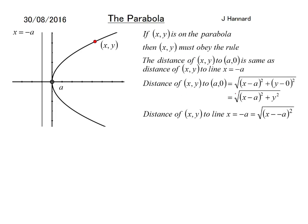And the distance of (x, y) to the line x equals minus a is the root of (x minus minus a) squared. And that's all to do with the points. So that means that the root of (x plus a) squared, that's just because that is a double negative, is equal to the root of (x minus a) squared plus y squared.